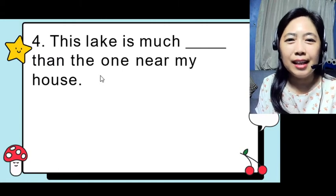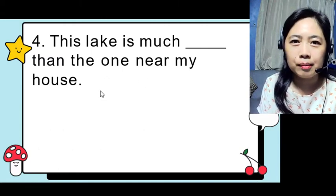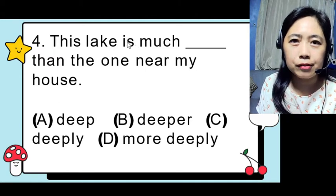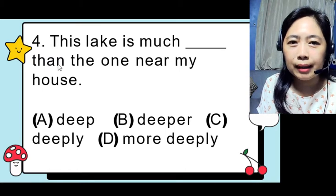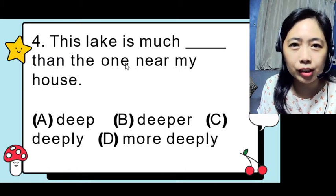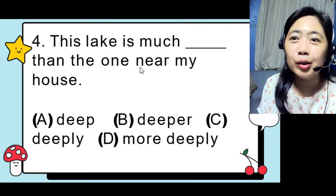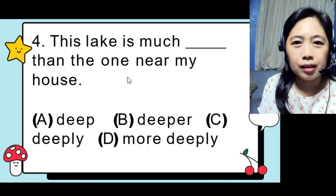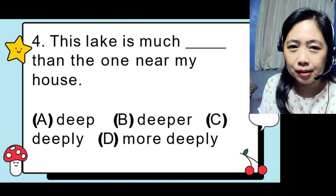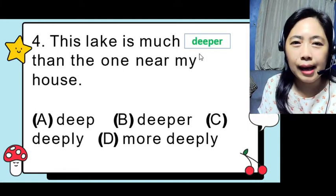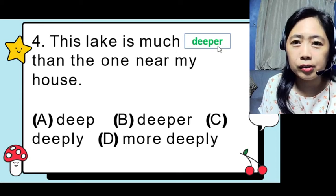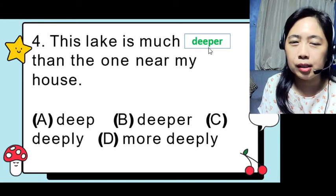Number four: 'This lake is much ___ than the other one near my house.' Choices are: deep, deeper, deeply, more deeply. We have a comparison indicated by 'than,' so we need a comparative adjective. The correct answer is 'deeper' — much deeper than the one near my house. We use 'much' with the comparative. We cannot use 'more deeper' because that would be redundant.